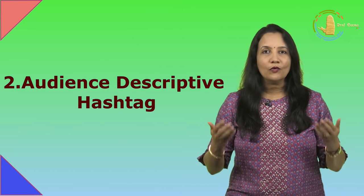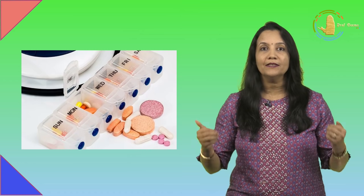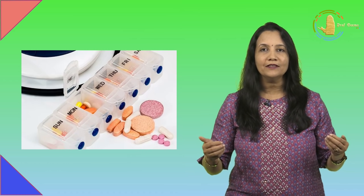Number 2 is Audience Descriptive Hashtags. These hashtags are used by defining the type of audience in the hashtag. For example, Fitness Freaks, Health, Fitness Goals, Gym can be used by a health supplement company to reach out to audience who likes to work out or likes to hit the gym.